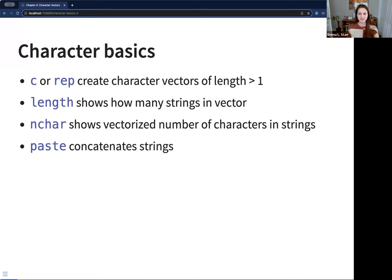Some more basics. You can use c or rep to create character vectors of length greater than one. Length just shows how many strings there are in the vector, whereas n character is vectorized to show the number of characters within each string. Paste is used to concatenate strings, and there's also paste zero, which is slightly more efficient when you don't need spaces.